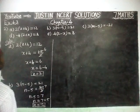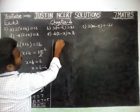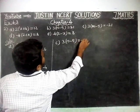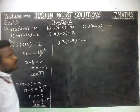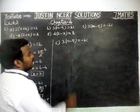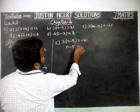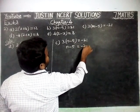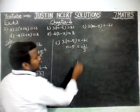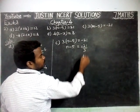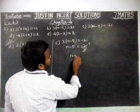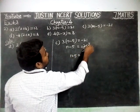Now I am going to take part C: 3(n - 5) = -21. Here also, same thing. This is in multiplication. I am going to take this multiplication into the right hand side. So n minus 5 is equal to -21 divided by 3. Multiplication becomes division. Again there is a possibility to simplify: 7 threes are 21. So n minus 5 is equal to -7.